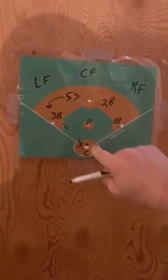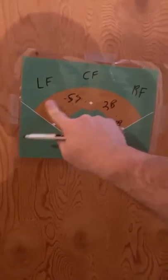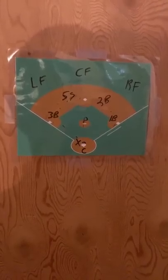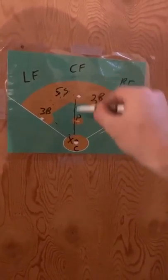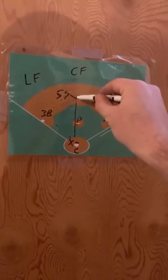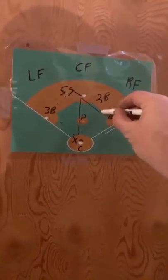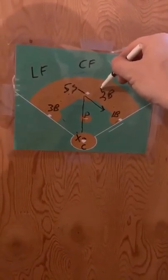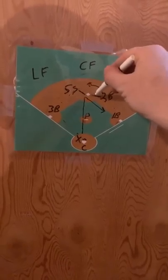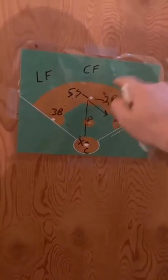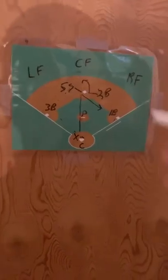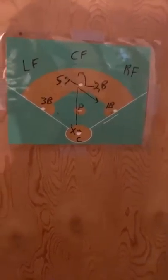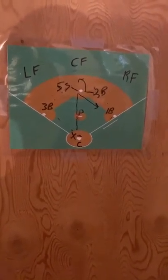That same thing goes with ground balls — we always back each other up. We may not have time to call it off on some plays, but if it's a slow ground ball up the middle, we want the shortstop to get the ball since it's an easier angle to throw to first base. On a ground ball up the middle, the second baseman is still going to back them up and go straight to the ball until they know the shortstop has it, and then they just peel off outside.